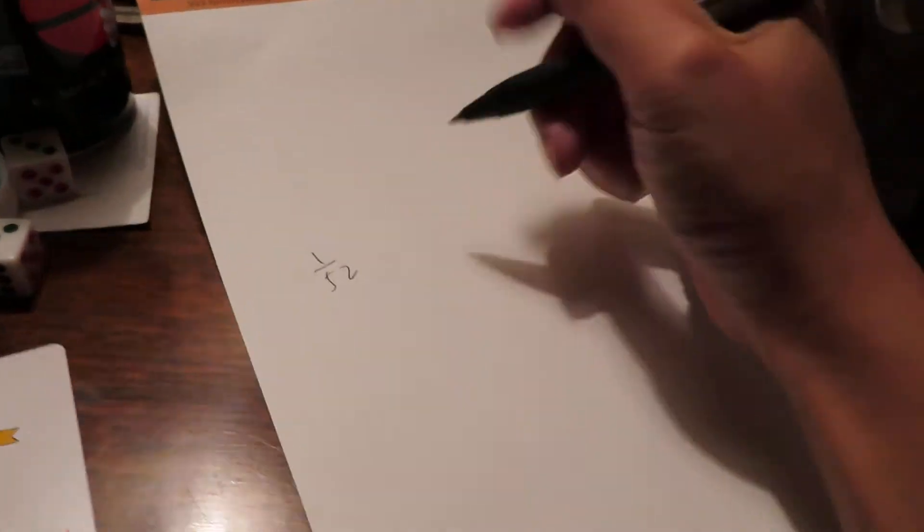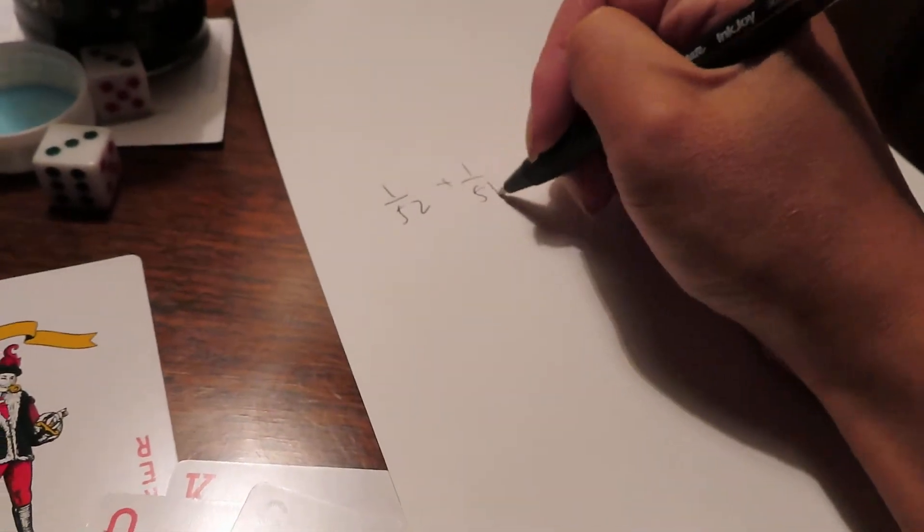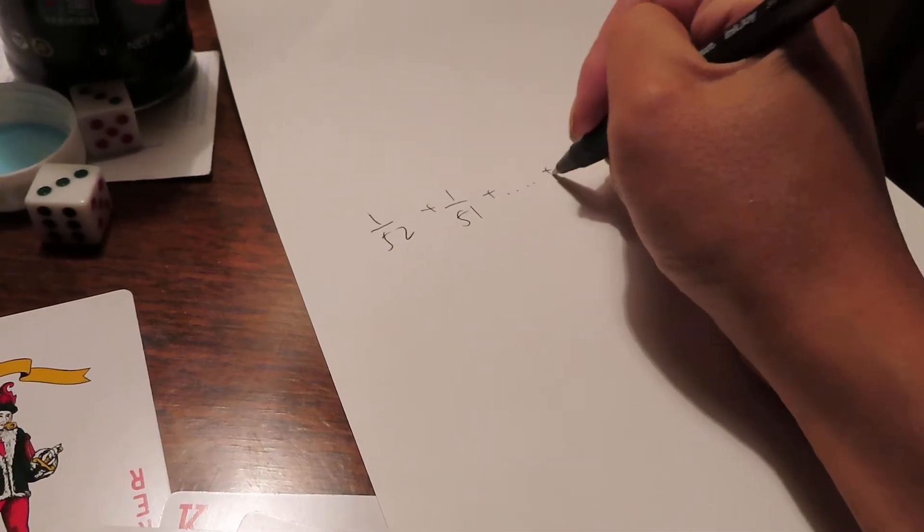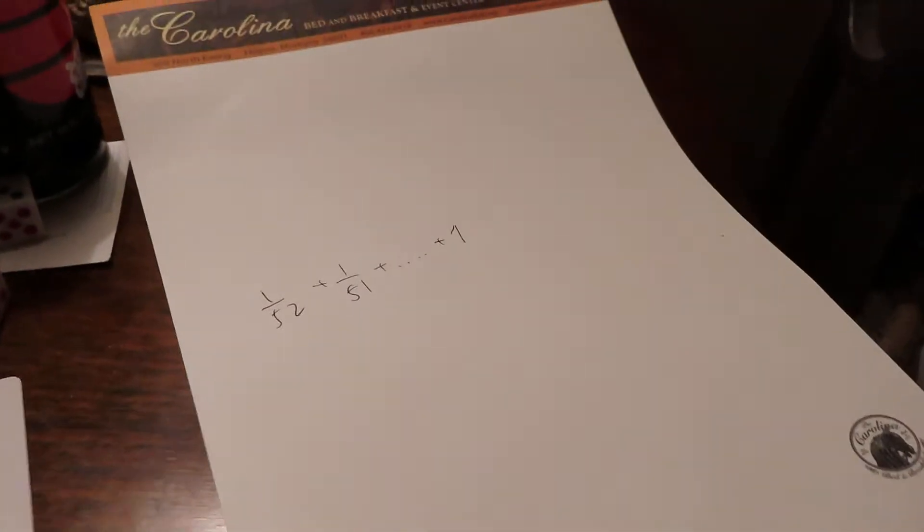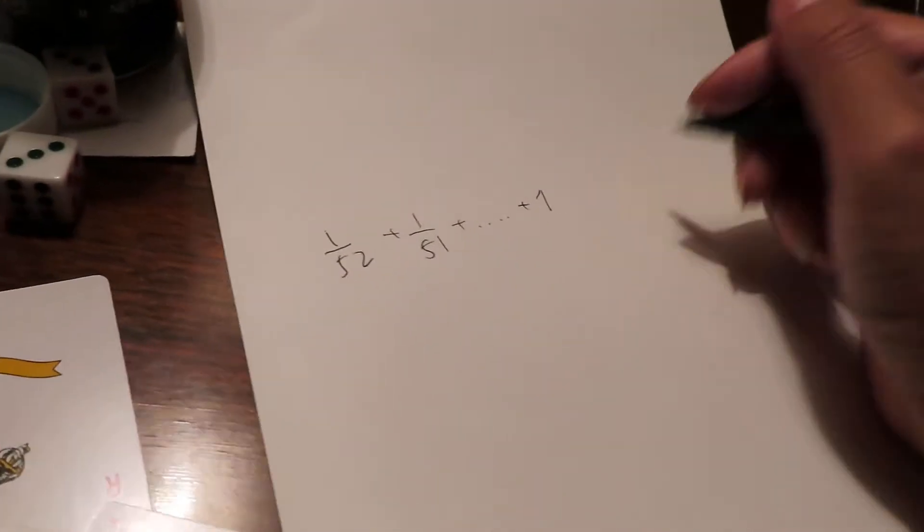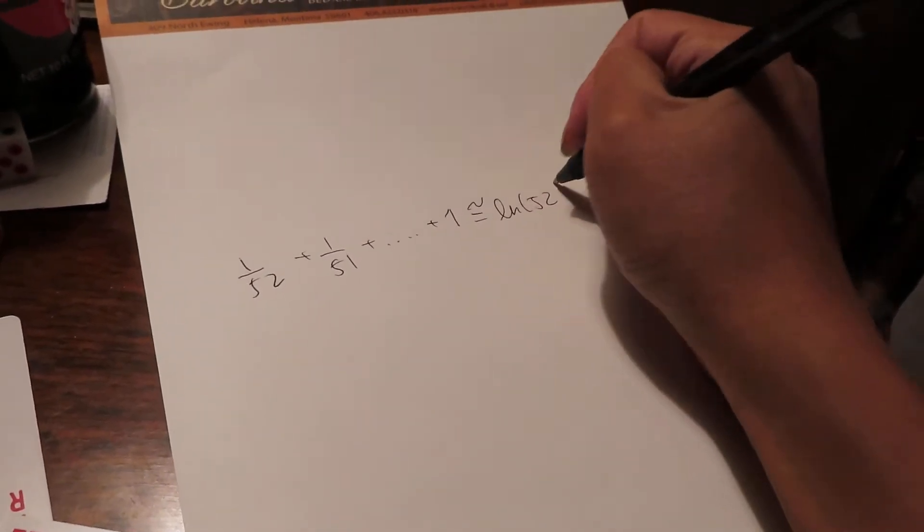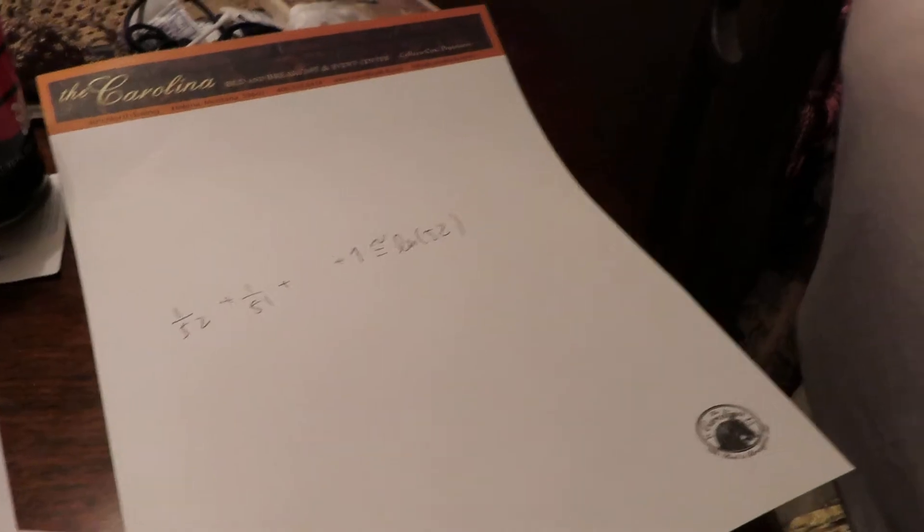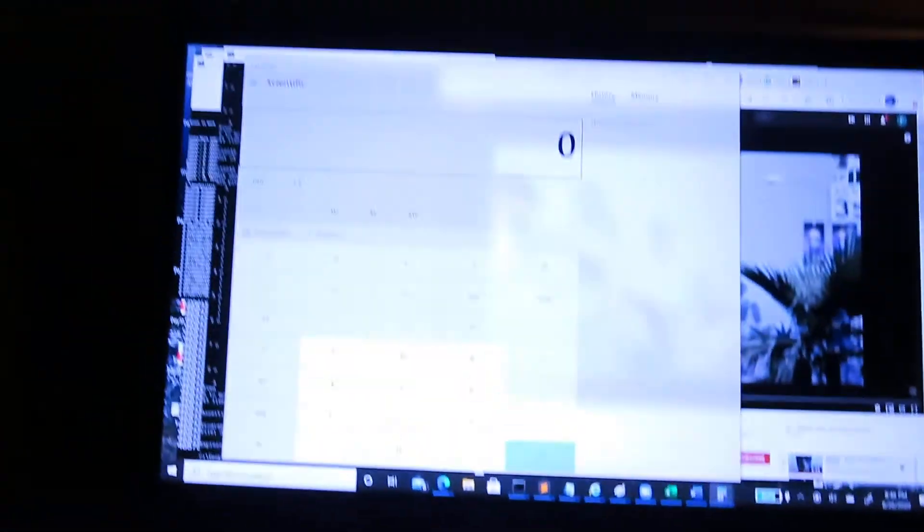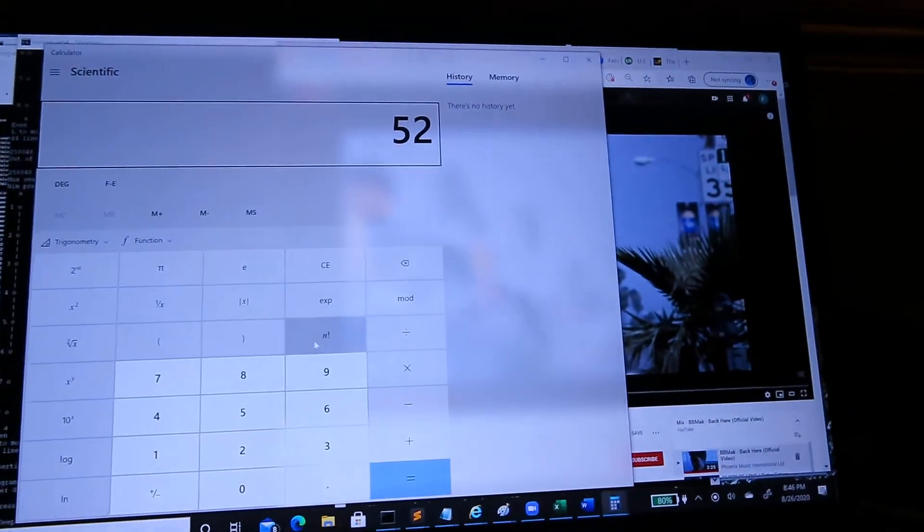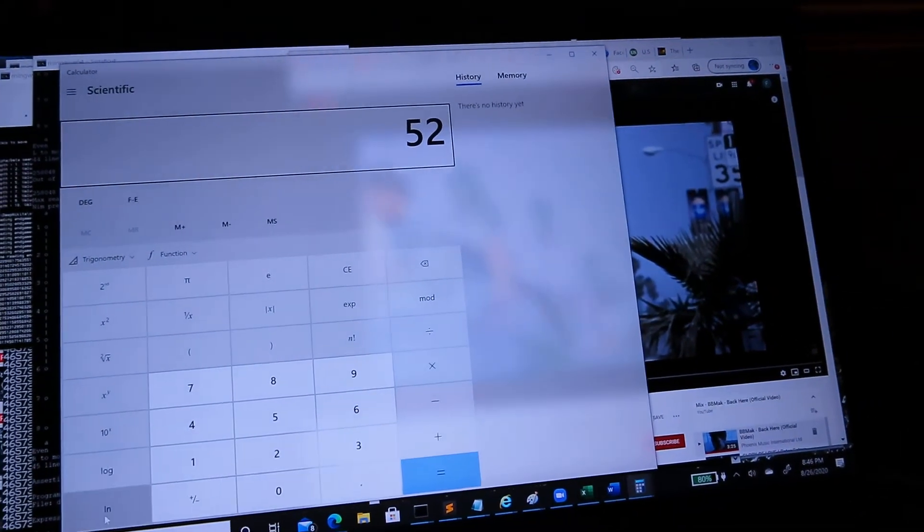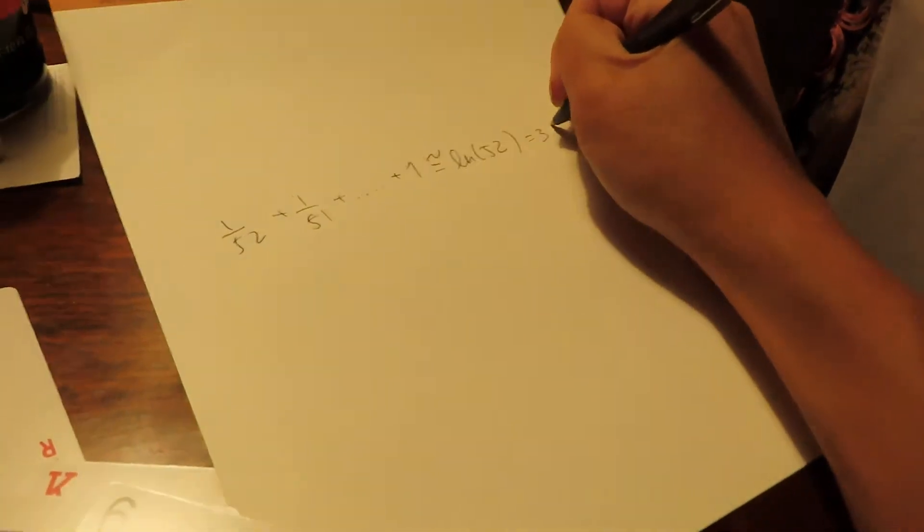Let's see how long I can make this sheet of paper last because I doodle so much. You got a 1 in 52 chance of guessing that first card correctly plus a 1 in 51 chance. And then the last card, if you have perfect memory, you're guaranteed to guess that one correctly, right? So we got the natural log of, or at least approximately the natural log of 52. Let's get out a calculator. 52. Where's my natural log button? It's a little bit under four cards correctly, right?